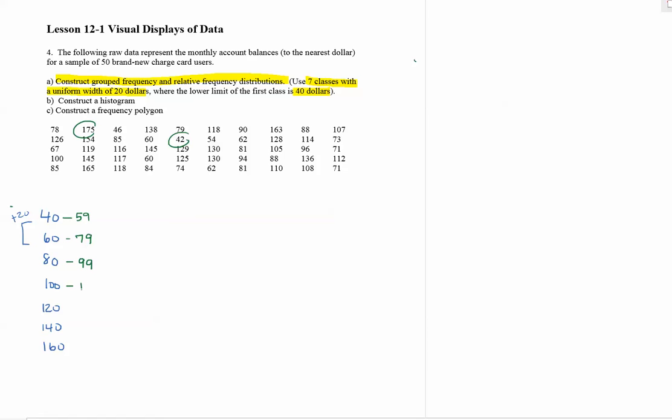One hundred to one nineteen, one twenty to one thirty-nine, one forty to one fifty-nine, and 160 to 179. So make sure you go up correctly. You can see that within each class going horizontally it's adding 19 consistently.